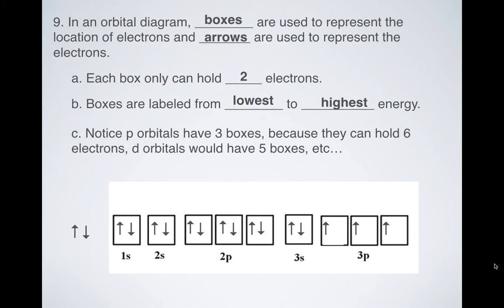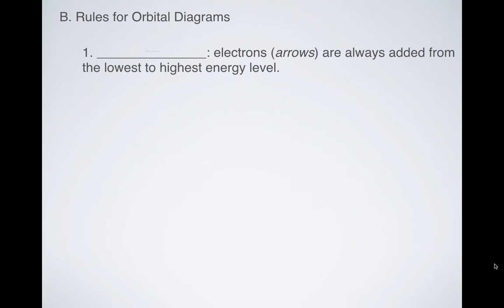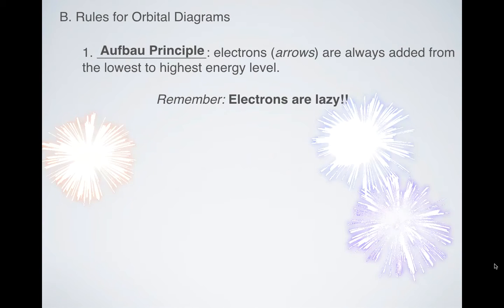What are the rules though? Now we actually have to go into the details of the rules. The first rule is called the Aufbau principle. The Aufbau principle says that these arrows or electrons are always added from the lowest energy to the highest energy. The reason why is kind of complicated, but I like to think of it like this: electrons are lazy. They don't want to waste energy if they don't have to waste energy. And since they don't want to waste energy, the Aufbau principle says they always start from the lowest energy.